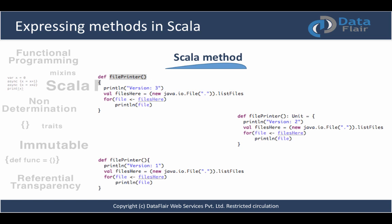There are three ways to write a method in Scala. The first uses the def keyword, then the method name, with curly braces. The second specifies the return type — for example, a file printer method that only prints files and returns nothing has a return type of Unit. The third way writes a method without an equal sign or return type, indicating it returns no value — this is called a procedure.